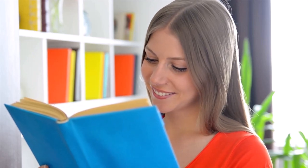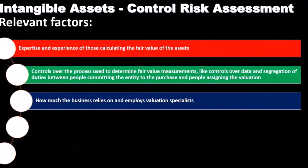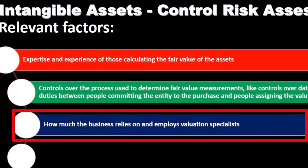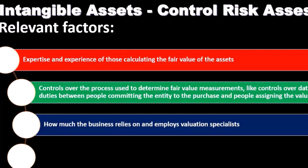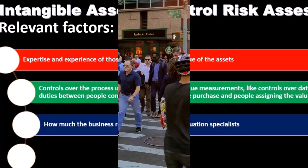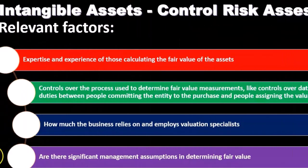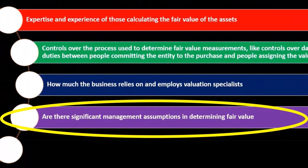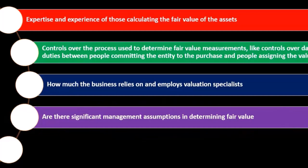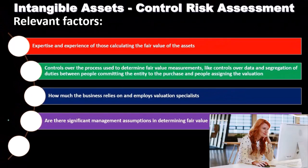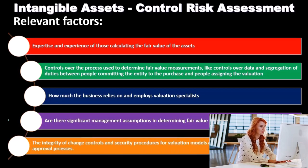We want segregation of duty as an internal control factor. We also consider how much the business relies on valuation specialists. For example, in the movie industry, specialists are needed to determine the value of intangible assets. We want to know the degree to which people rely on specialists and who those specialists are. We also want to consider any significant management assumptions in determining fair value, since estimates and assumptions within the valuation process can be a source of problems.